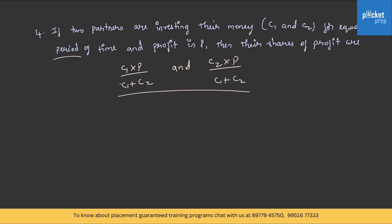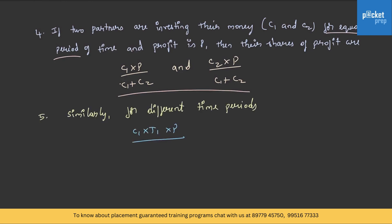For different time periods, the profit shares are C1×T1×P/(C1T1+C2T2) and C2×T2×P/(C1T1+C2T2). With this, we are done with the formulae and shortcuts.